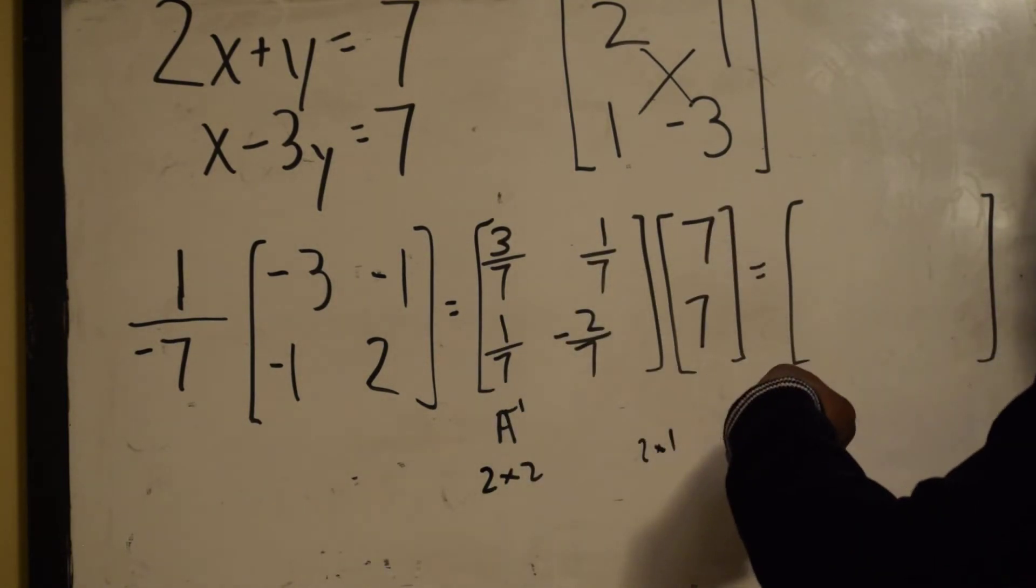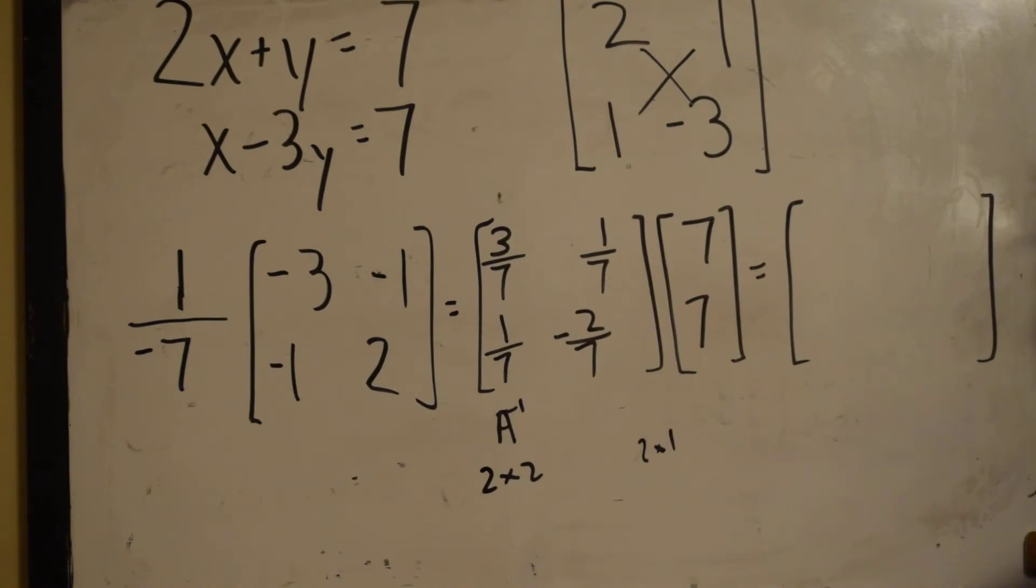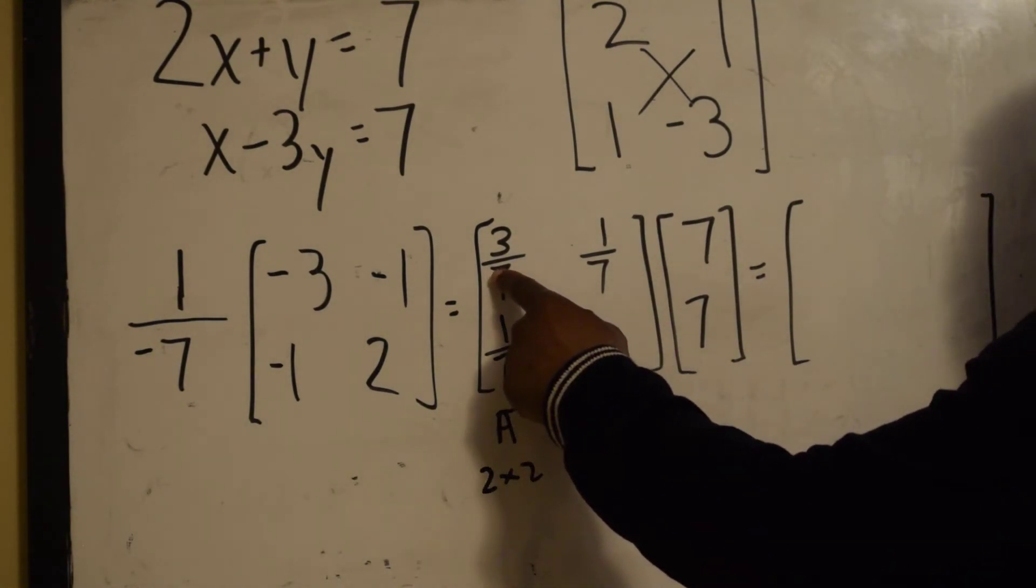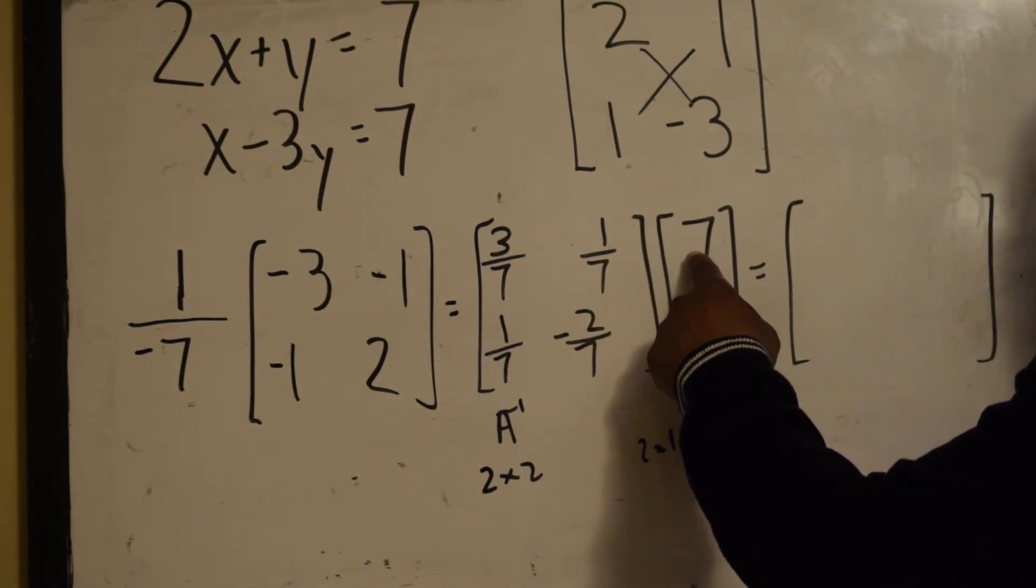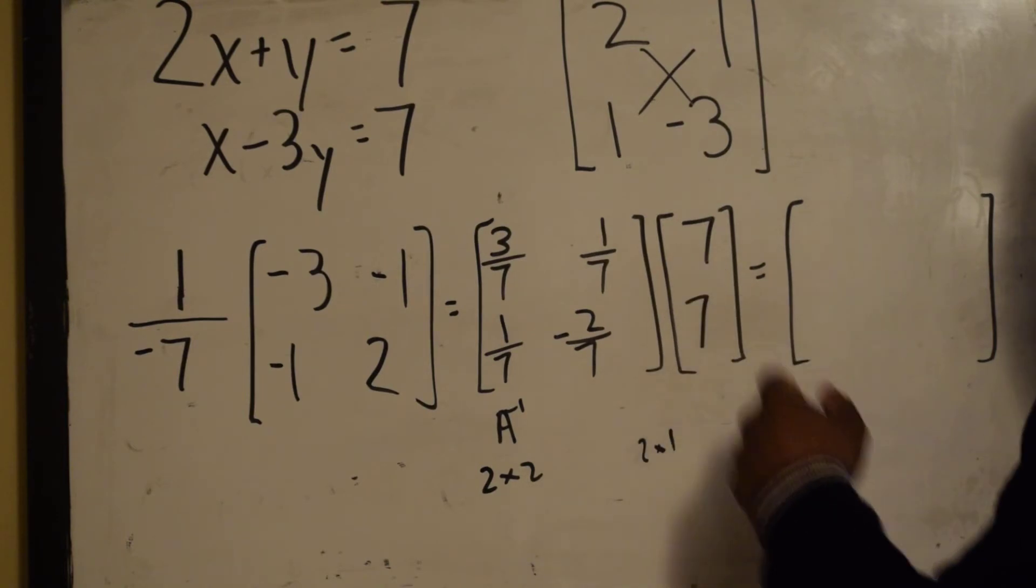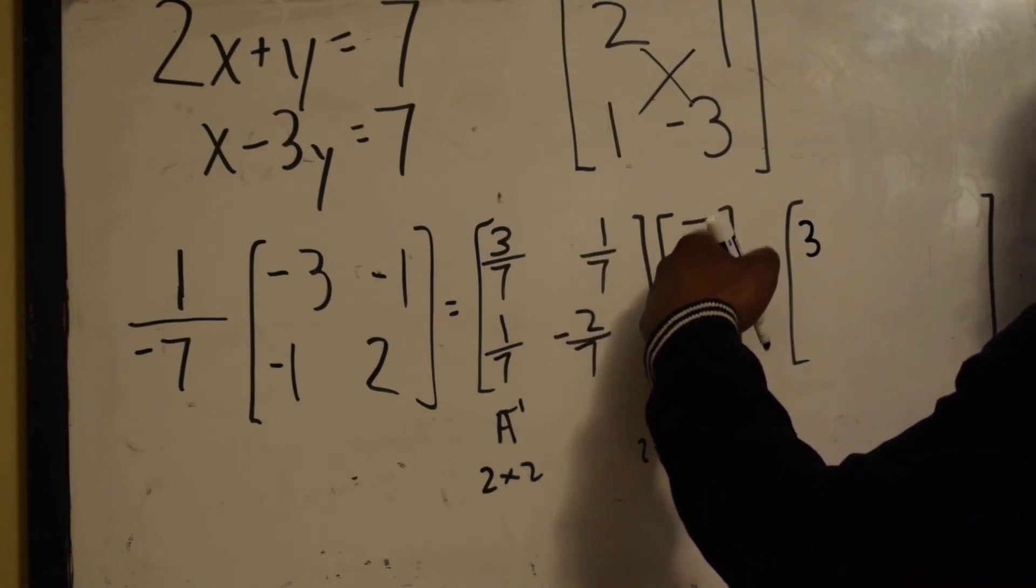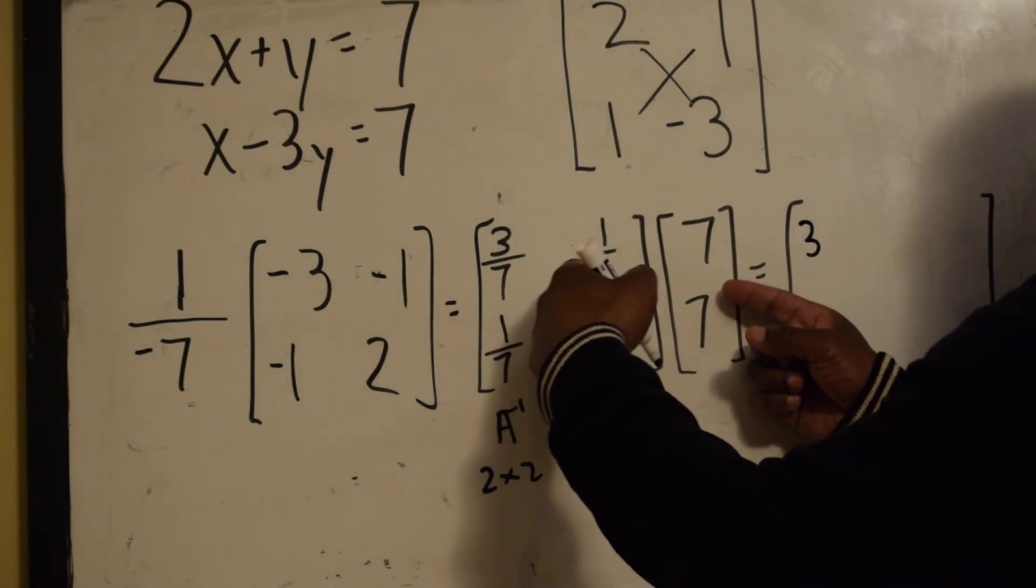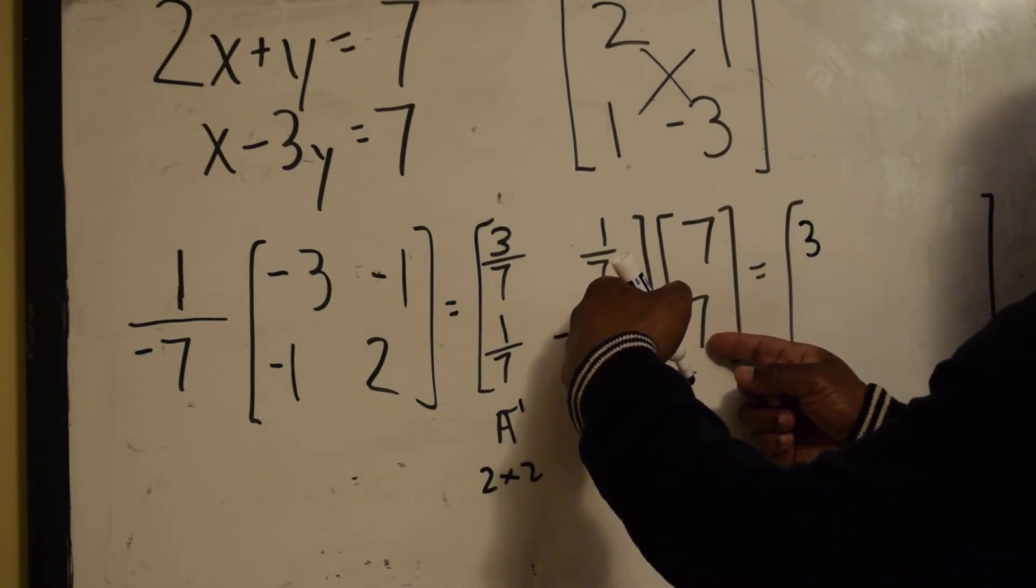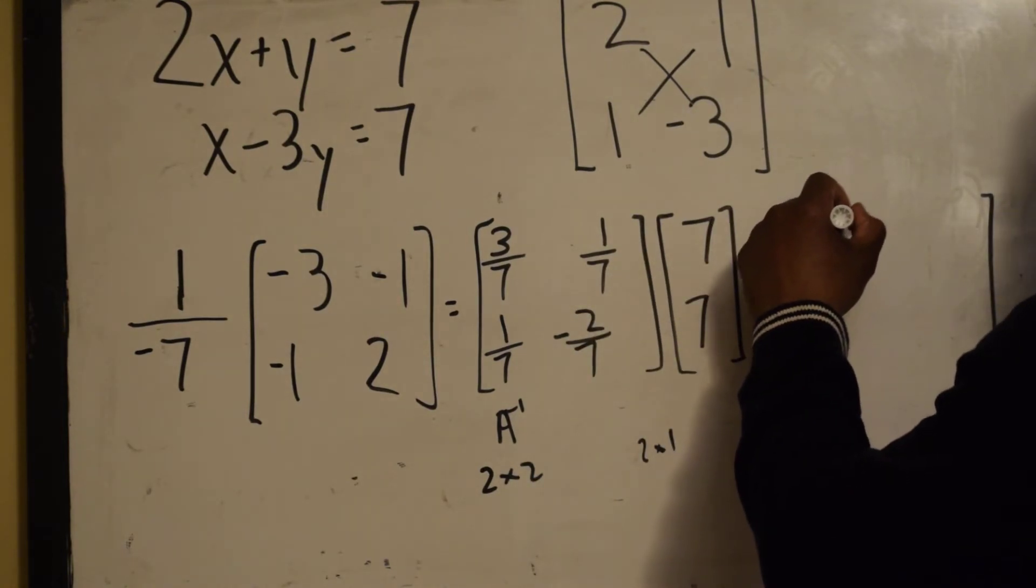So we go first row, first column. 3/7 times 7 is 3. First row, first column, 3 plus 1/7 times 7 is 1. So that's 3 plus 1.